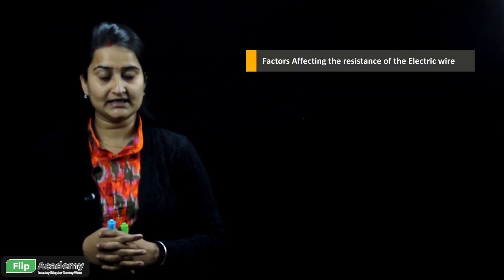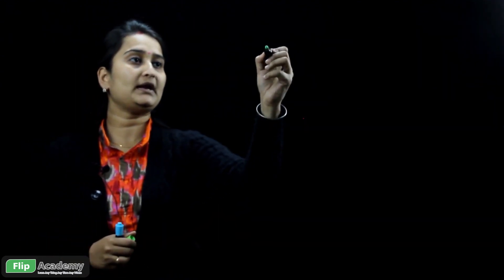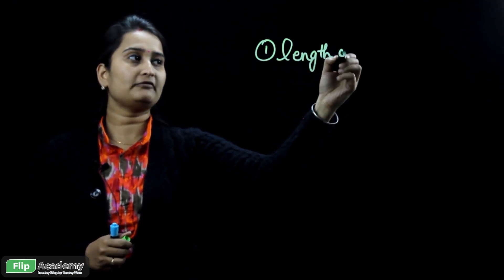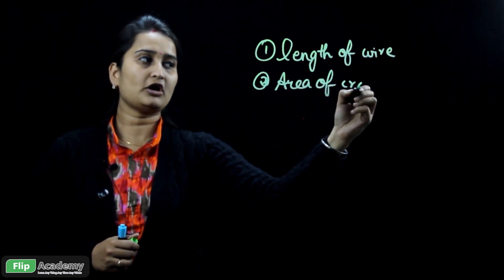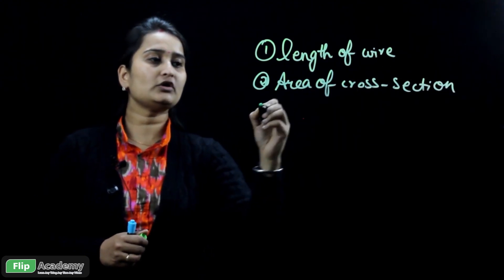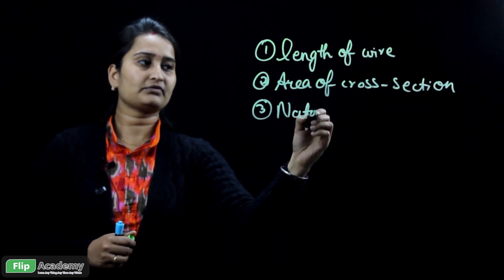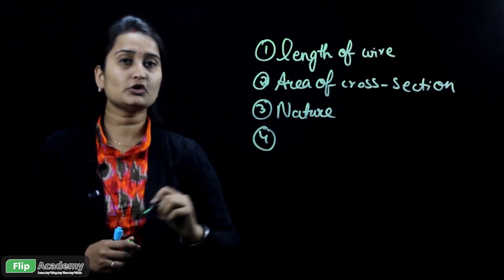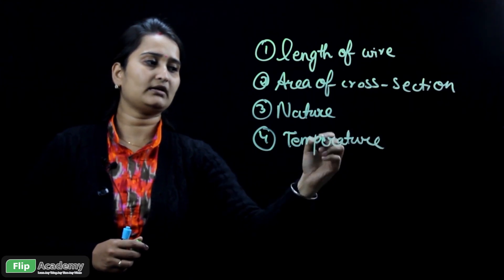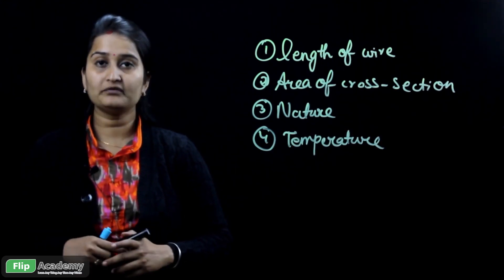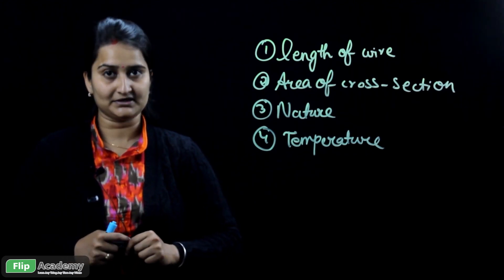Now let's start with the factors affecting the resistance of the electric wire. There are various factors on which the resistance depends upon. The resistance depends upon the length of wire, also depends upon the area of cross section of a wire, also depends upon the nature of material, and it also depends upon the temperature of the electric wire. These are the various factors on which the resistance of the electric wire is dependent upon.